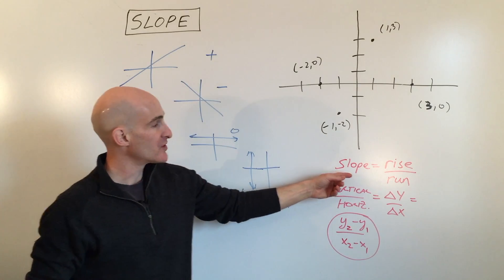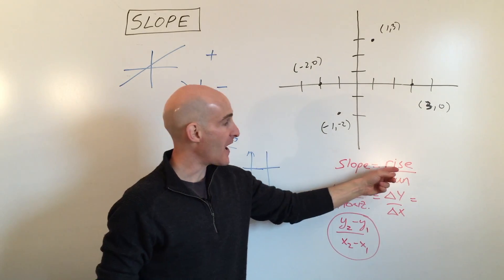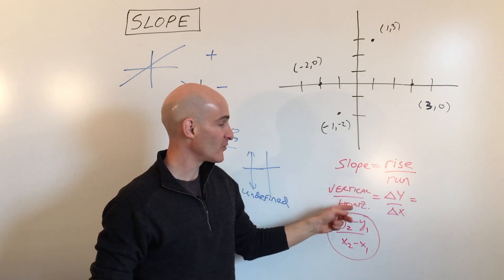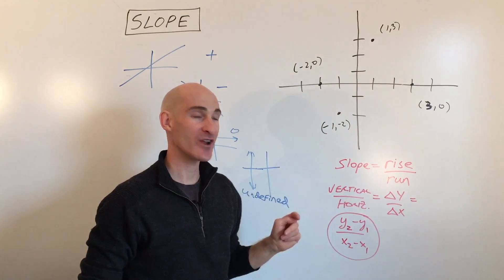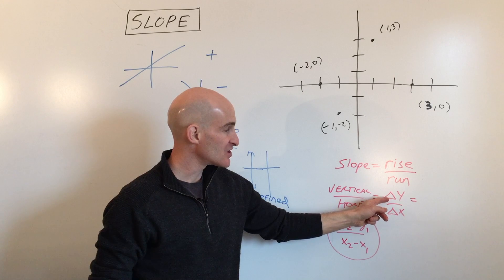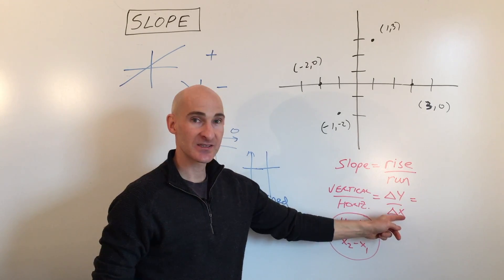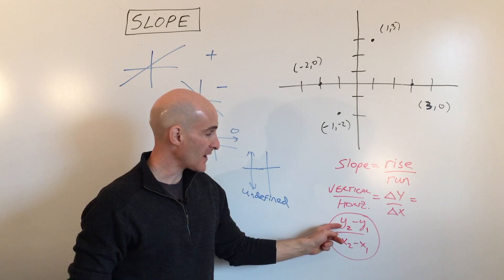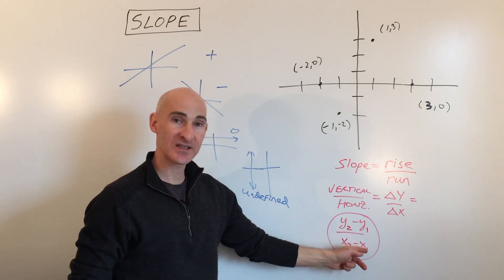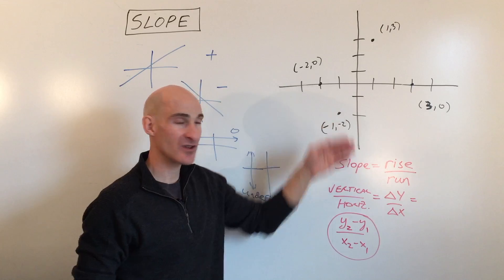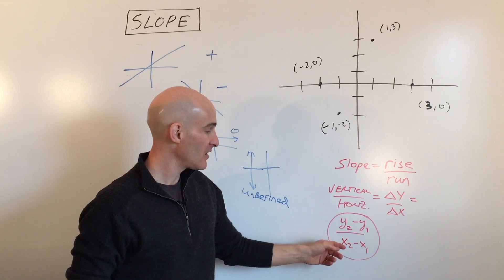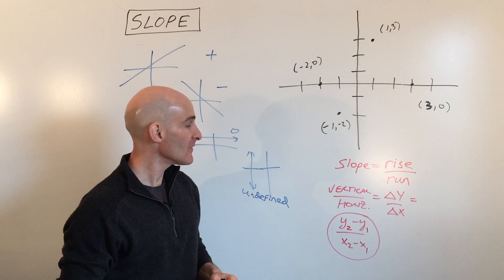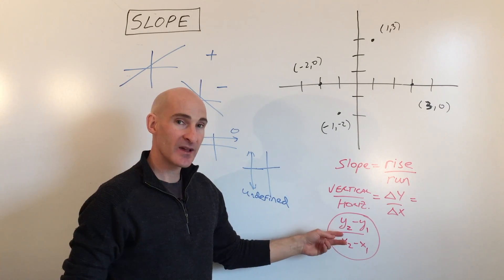Slope is defined as the rise — the vertical change — over the run, which is the horizontal change. This is sometimes written as delta y over delta x, or you can use the formula y2 minus y1 over x2 minus x1. Subtracting the y's gives you the vertical change, and subtracting the x's gives you the horizontal change.